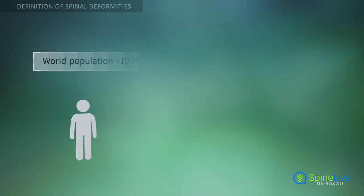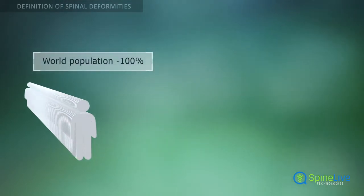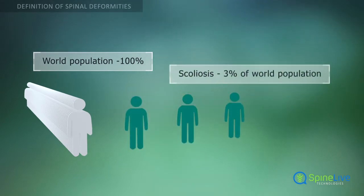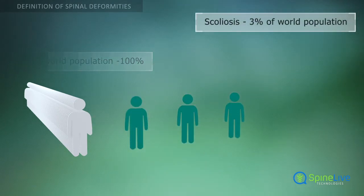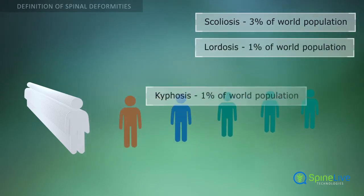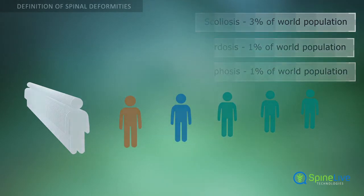Scoliosis is the most prevalent type of spinal deformity. It is present in 3% of the world population. Commonly it occurs in children and adolescents. Lordosis and kyphosis occur less often and usually in adults.